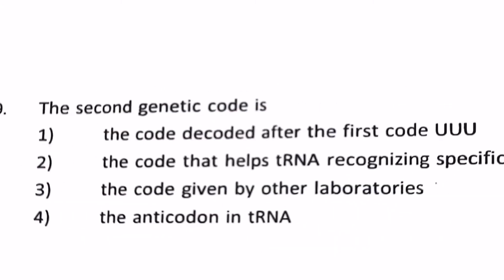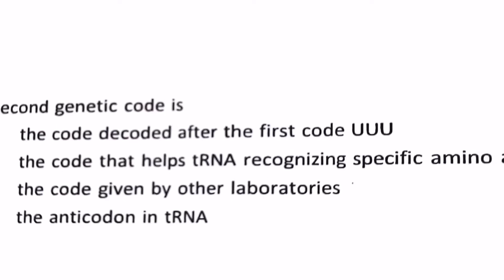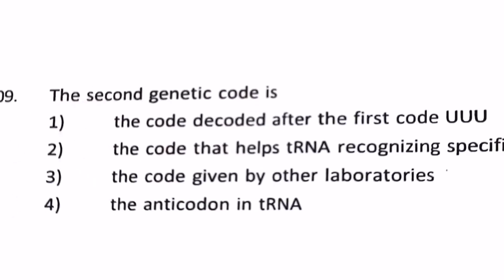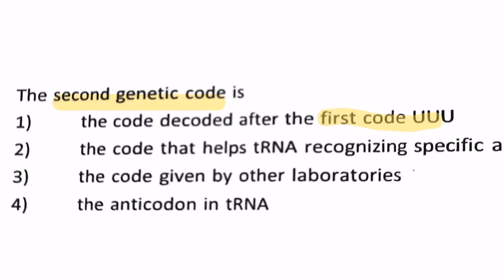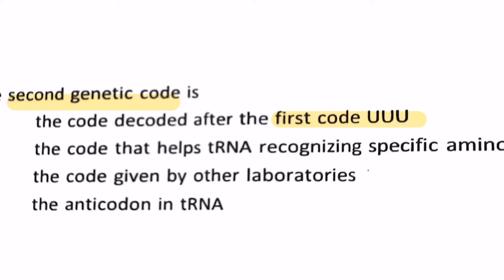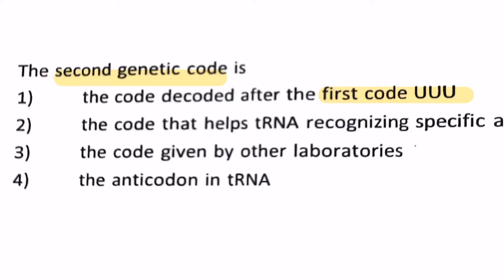1) The code decoded after the first code that is triple U, 2) the code that helps a tRNA recognize specific amino acid, 3) the code given by other laboratories for the anticodon in tRNA. By the reference, second genetic code, first code as given as UUU, then I think the most relevant answer will be the code that helps the tRNA recognize that specific amino acid. So it can be any other particular 3 codon, it just has to recognize one tRNA specific amino acid and that will become our second genetic code. So answer should be number 2.